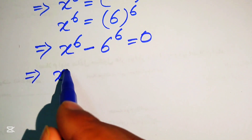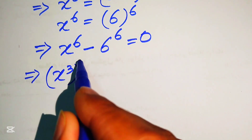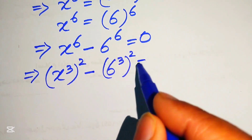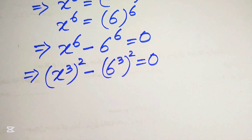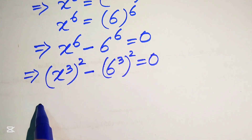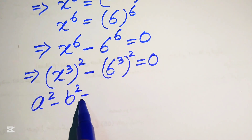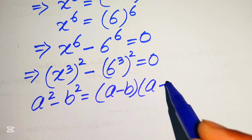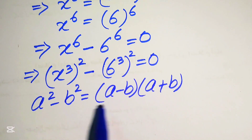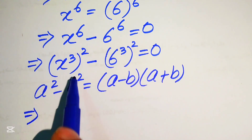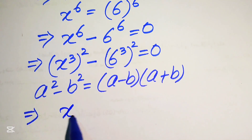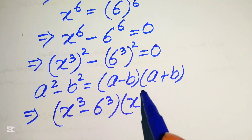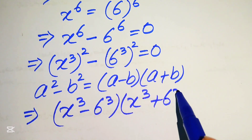We rewrite x^6 as (x³)² and 6^6 as (6³)², so the equation becomes (x³)² − (6³)² = 0. We apply the algebraic formula a² − b² = (a − b)(a + b).